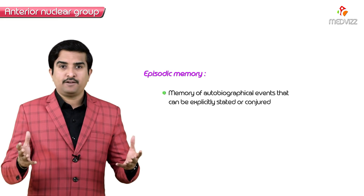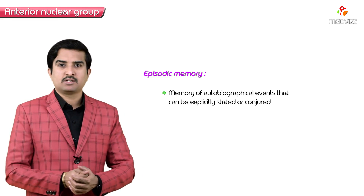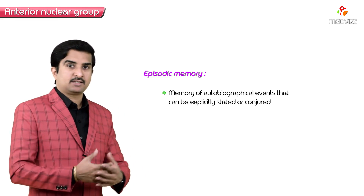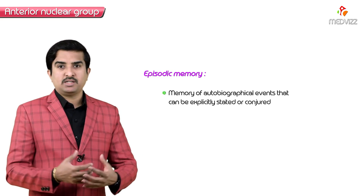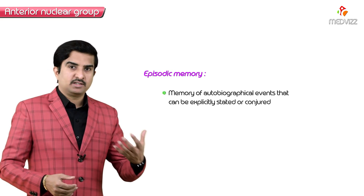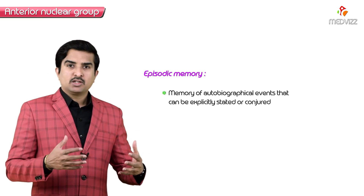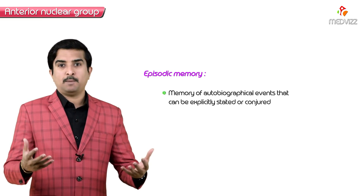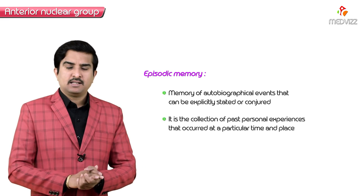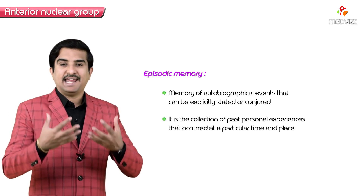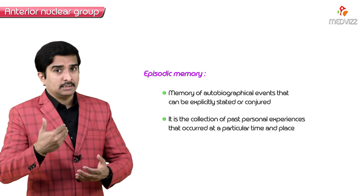Episodic memory is a type of memory of autobiographical events — you remember past times, past places, events, and people. Questions like who, what, when, and where can be answered by means of episodic memory. In simple language, it is the collection of past personal experiences that occurred at a particular point in time and place.